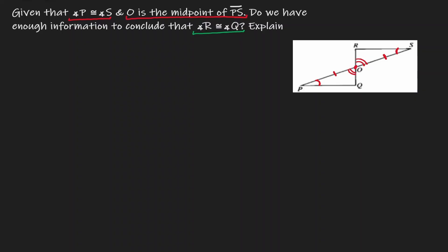Now, if we identify triangle POQ and triangle SRO, notice that those two triangles are congruent. We can see that they satisfy angle, side, angle — and the same goes for the other triangle: angle, side, angle. So we can conclude that triangle POQ is congruent to triangle SOR by the angle-side-angle congruence theorem.